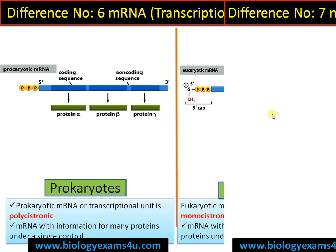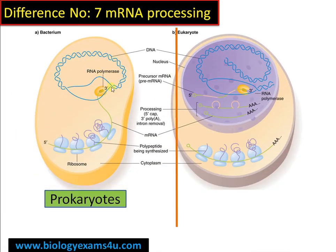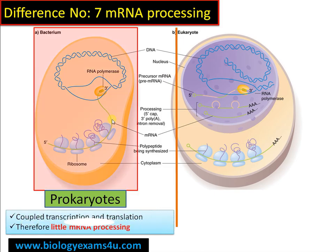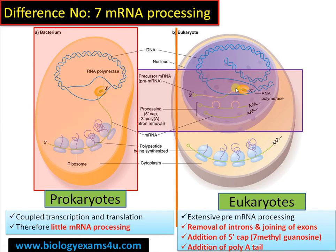Difference number seven is regarding mRNA processing. In prokaryotes, transcription and translation occur simultaneously, so there is little mRNA processing. In eukaryotes, there is extensive mRNA processing: introns are removed and exons are joined (splicing), a 5' cap is added, and a poly-A tail is added. These modifications prevent mRNA degradation and facilitate transport of the processed mRNA into the cytoplasm for translation.